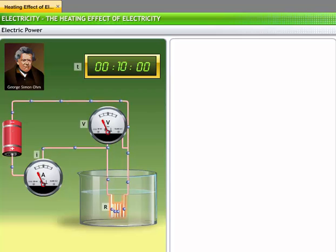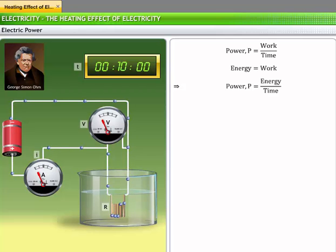You have learned in earlier classes that power is the rate of work done. As energy is the capacity to do work, energy and work are equivalent. Hence, we also define power as the rate of consumption of energy. In terms of electricity, the rate of consumption of electricity is electric power. When an electric current flows through a conductor, the rate of consumption of electricity by an electric circuit is also the rate of dissipation of electrical energy in the form of heat through the conductor.